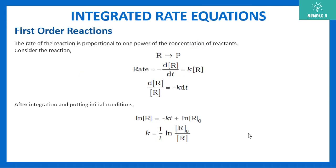Now let's talk about first order reaction. First order reaction means the rate of reaction is proportional to the one power of concentration of reactants. For example, consider R gives product P. Rate equals minus dR/dt equals k·R raised to power 1, which is just k·R. Separating variables and rearranging gives: dR/R equals minus k dt.